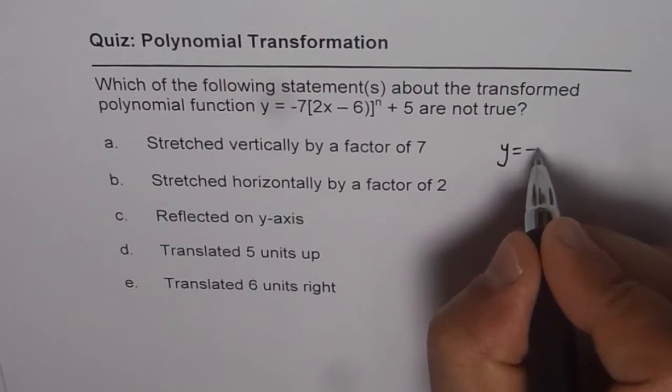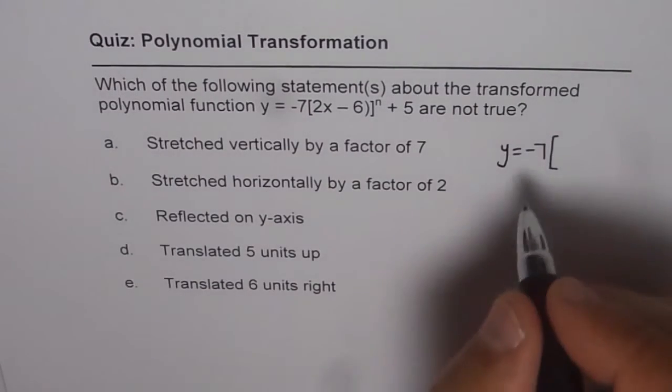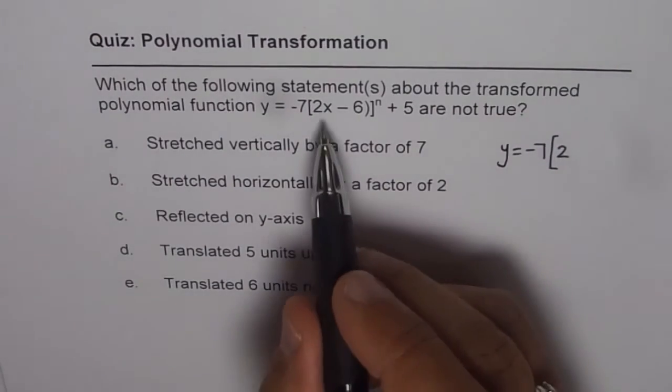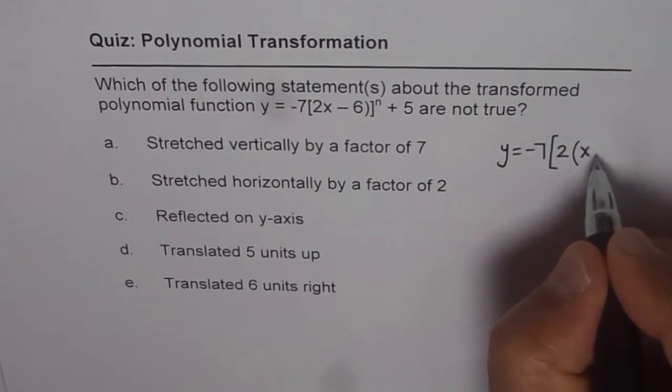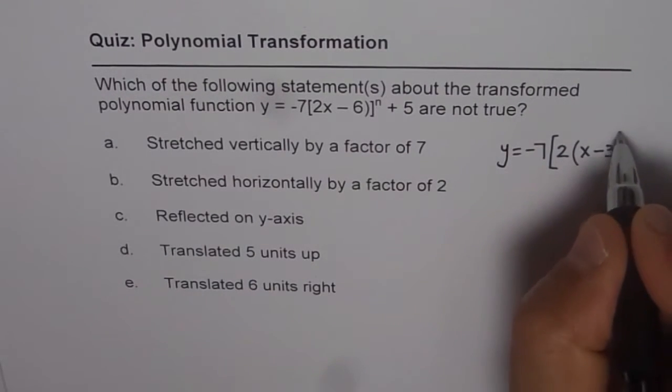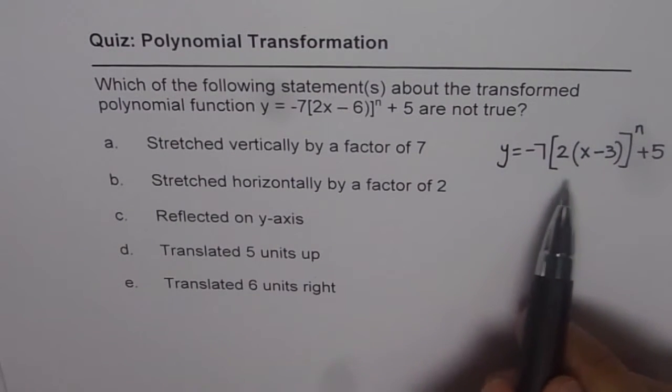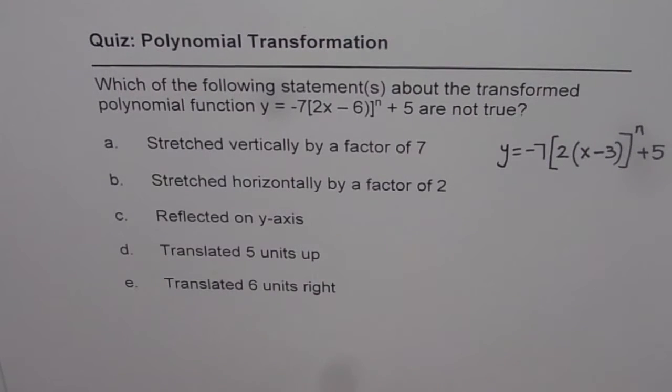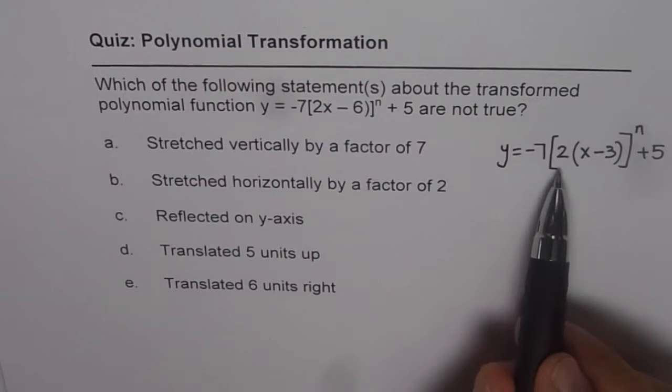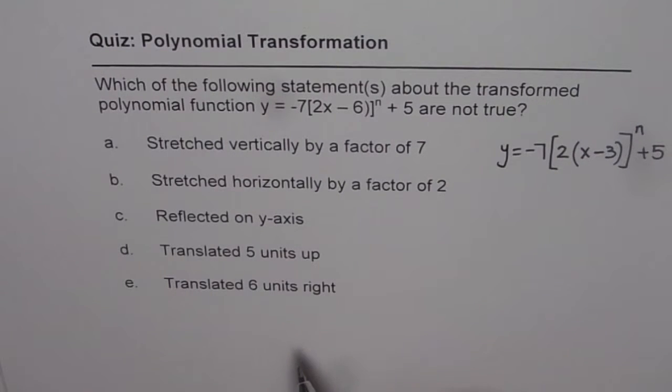I get y = -7(2(x - 3))^n + 5. We can factor out 2. That is your horizontal compression and stretch factor. This is the equation which we should read for answering the questions. It is very important to factor and then understand the transformation.